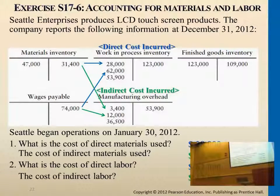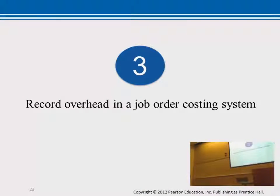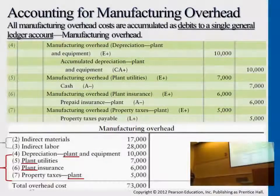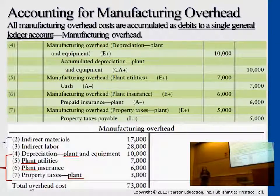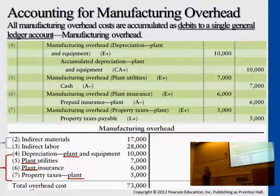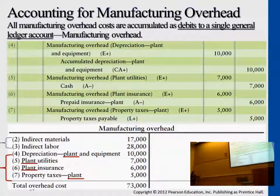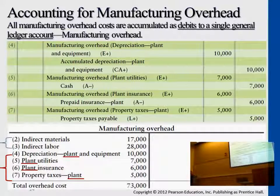Let's get to the overhead category. We talked about materials and labor. The overhead category consists of all the indirect costs. We have indirect materials and indirect labor here, and this is showing you some examples of other indirect costs.